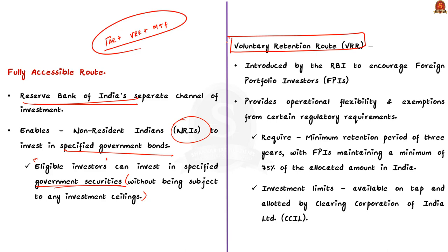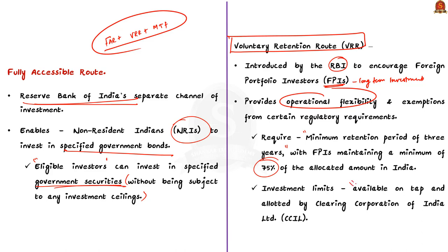VRR or Voluntary Retention Route is another scheme introduced by RBI to encourage the foreign portfolio investors for long-term investments in the Indian debt markets. It provides operational flexibility and exemptions from certain regulatory requirements. Moreover, this route requires a retention period of over three years with the FPIs maintaining a minimum of 75% of allotted amount in India. The investment levels are available on tap and allotted by Clearing Corporation of India Limited CCIL on a first-come first-serve basis. This is the base points about Voluntary Retention Routes.